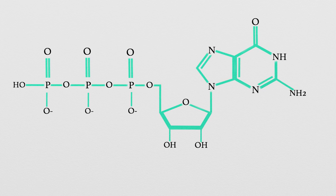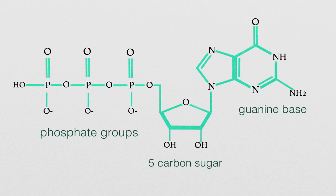GTP, or guanosine triphosphate, is a nucleotide made of a guanine base attached to a 5-carbon sugar, with three phosphate groups extending from its fifth carbon.